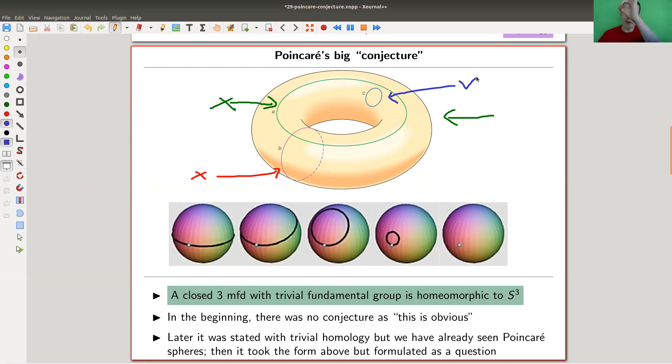Let me remind you the torus is hollow so you really can't shrink this little loop. The C loop actually clearly shrinks - it's just on the surface, you just shrink it back to a point. That's a non-trivial loop.